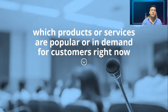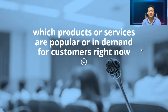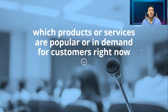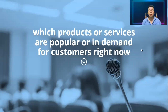I want you to answer this question in the chat: which products or services are popular or in demand for customers right now? You already know what a product is, you know what a service is, 'popular' you understand, 'demand' as well, 'customers' we already covered. And 'right now' — Kevin says masks and alcohol. Very good, Kevin — because of the lockdown, because of the pandemic.